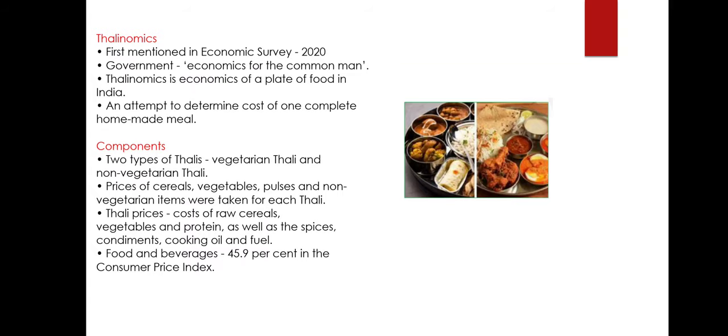Why is thalinomics important? The price of a plate of food has the most direct effect on the common man. Through thalinomics we can understand whether the common man in India is able to afford a completely cooked Indian thali. Thalinomics also tells us that food and beverages constitute 45.9% of the Consumer Price Index.